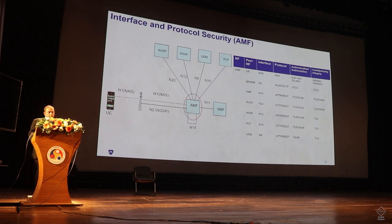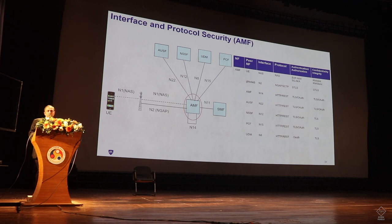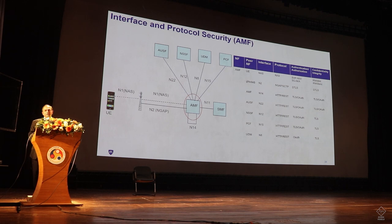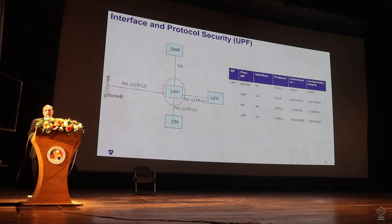If I want to make sure AMF — a control plane function — is properly secured, I have to look at which other components it's talking to and which protocols are being used. On the left side it's talking to gNB; on the right side to other network functions. Do I have enough security policies to protect these protocols? On the user plane, once you're authenticated and authorized, you send data — but someone might be spoofing it. I need to make sure I have the right protocols in place to protect against that.